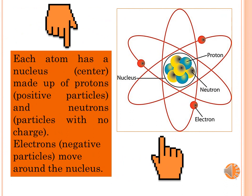Each atom has a nucleus made up of protons (positive particles) and neutrons (particles with no charge). Electrons (negative particles) move around the nucleus.